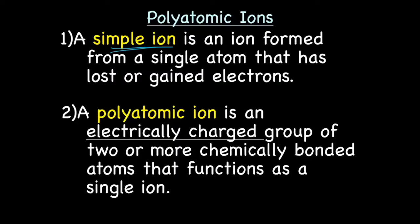A polyatomic ion, on the other hand, is an electrically charged, meaning it has a positive or negative charge, an electrically charged group of two or more chemically bonded atoms that function as a single ion.